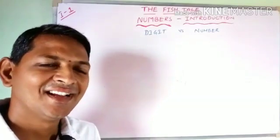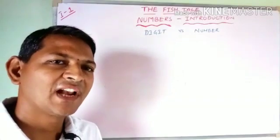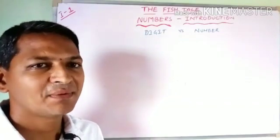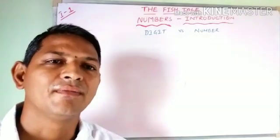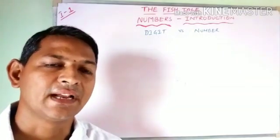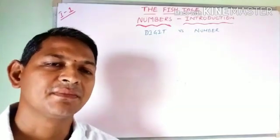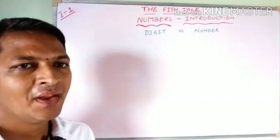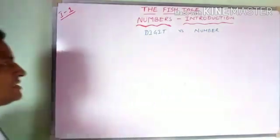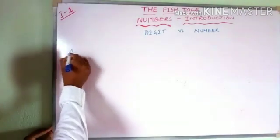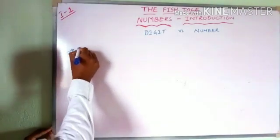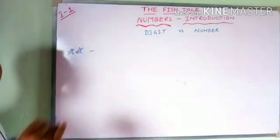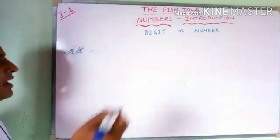Hi children, as part of class with Maths in the chapter 'The Fish Tale,' today we are going to understand the difference between a digit and a number. Can you please tell me how many stars are there?